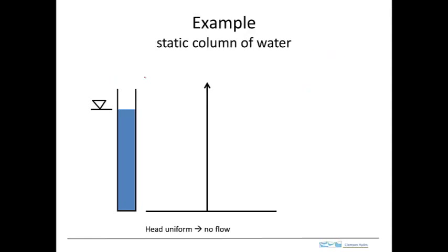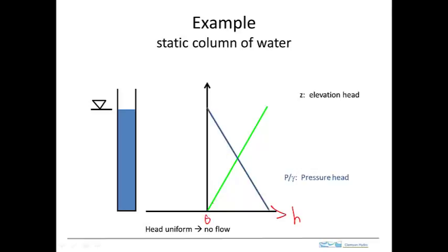Let's take a look at hydraulic head. We've seen this before applied to the saturated zone. So in that case, we've got a static column of water — there's no flow — so the hydraulic head needs to be constant through this column. If we plot the head as a function of elevation, the elevation head is shown here as this green line. The pressure head is by definition zero at the water table, and it increases downward.